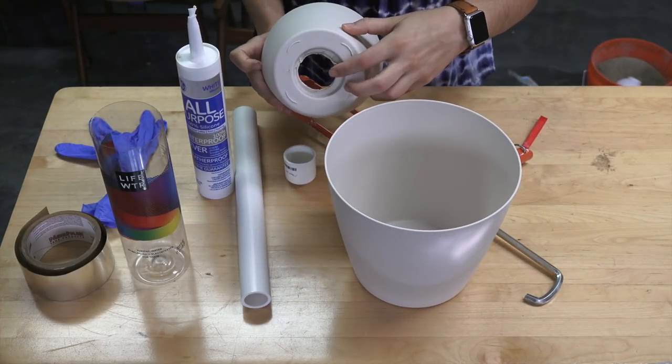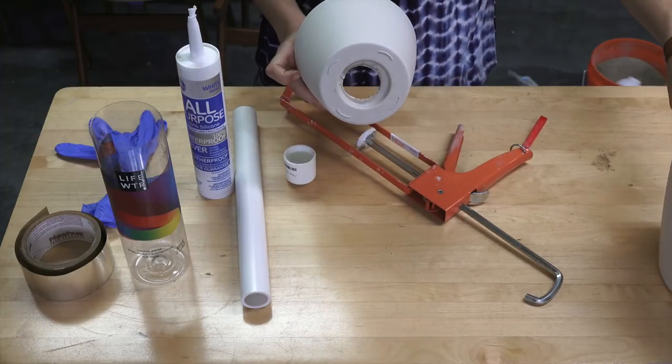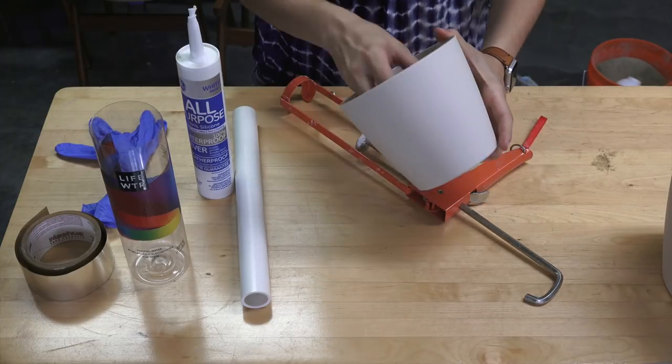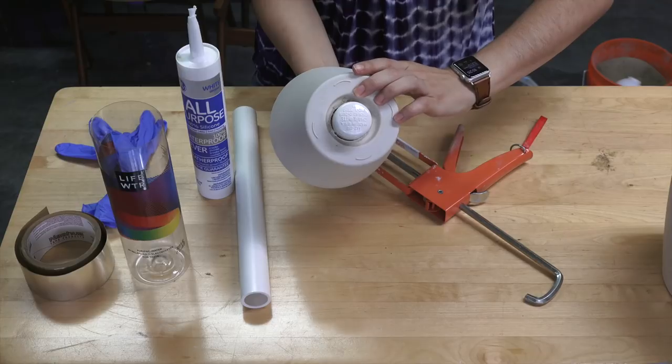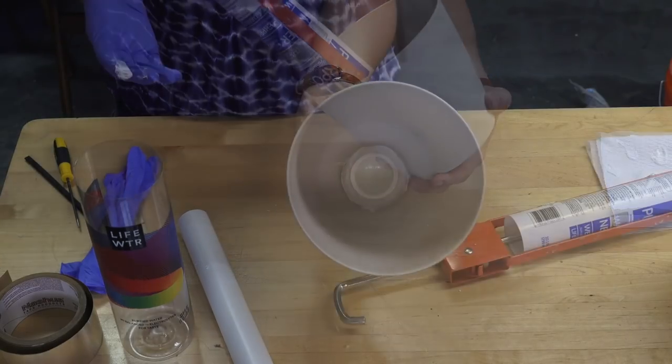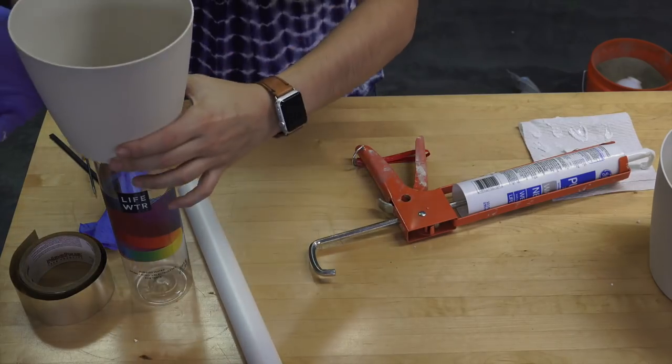The first step is to cut a 1 and 3/4 inch hole with a hole saw in the smaller of the two pots. Next I'm going to place the PVC cap halfway into the hole and silicone it into place. The silicone will keep the concrete from seeping into the hole. I let that dry for a couple hours.